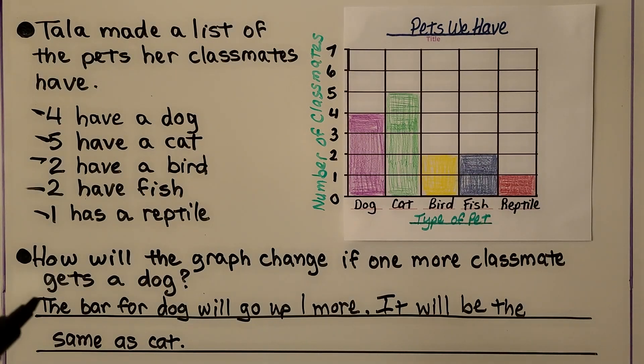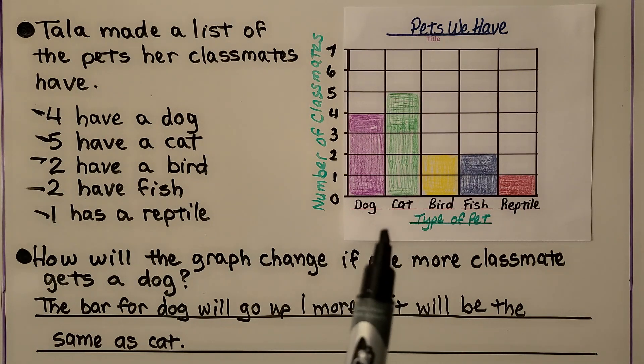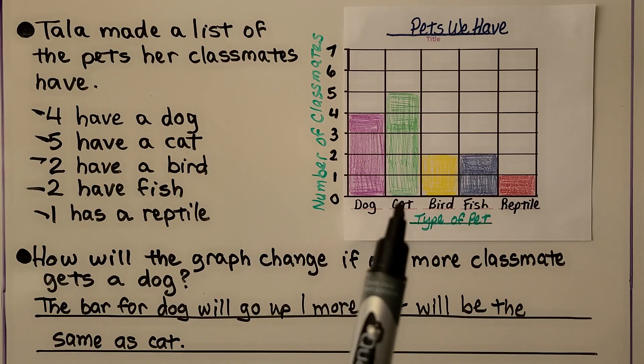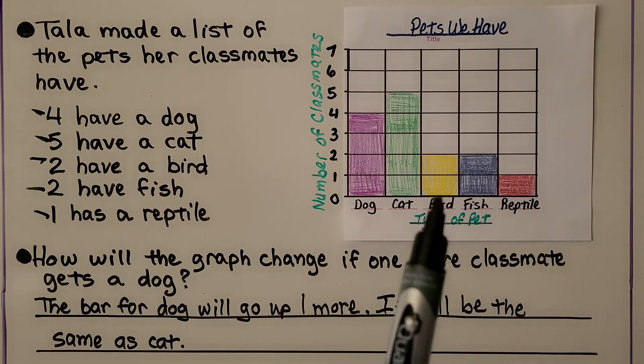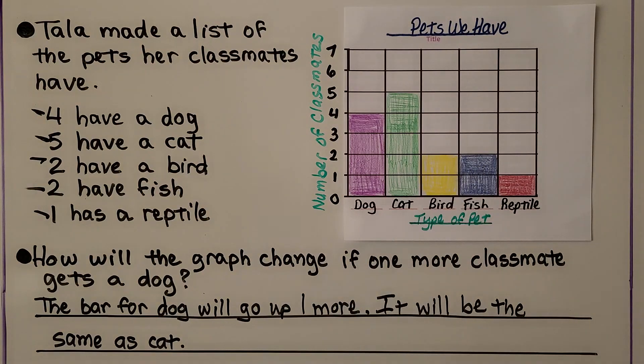We can write the bar for dog will go up one more, it will be the same as cat. And we can look at this right now the way it is and see that cat is the most, reptile is the fewest, and we can see bird and fish are the same number.